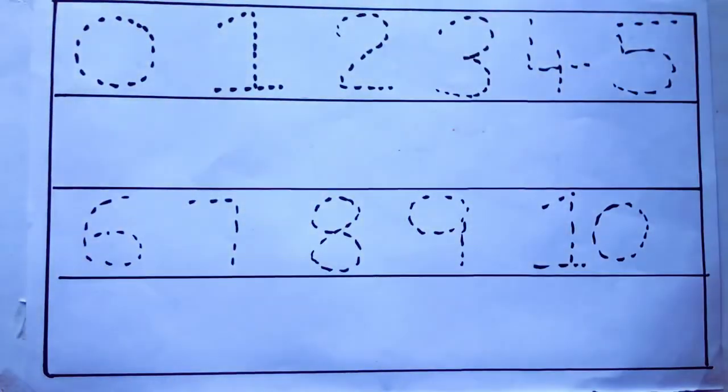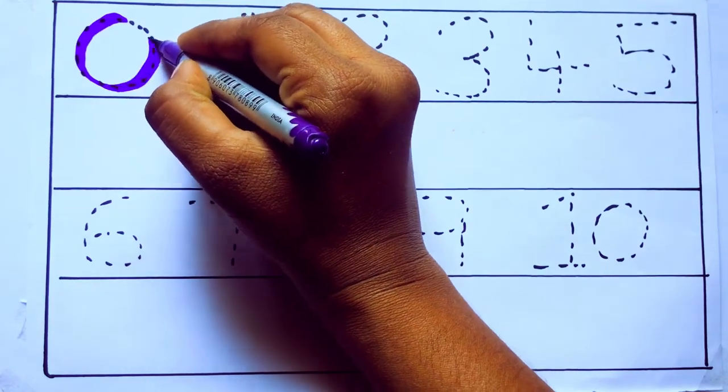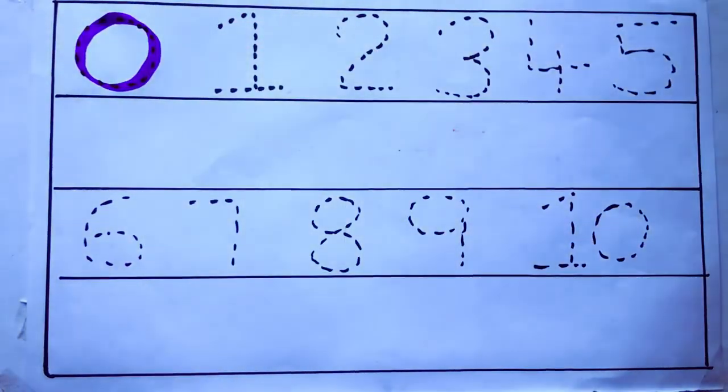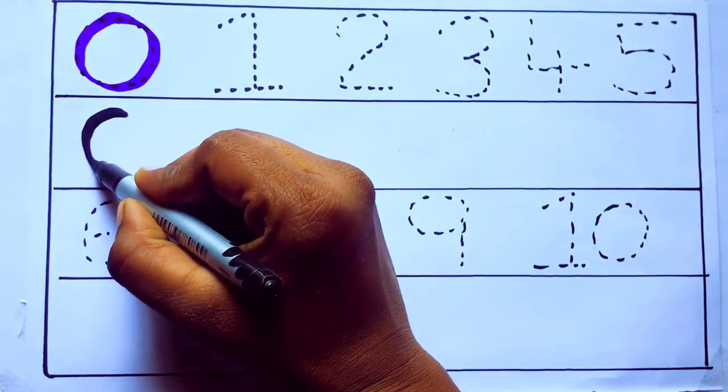Let's draw numbers. Violet color 0: Z-E-R-O, zero.